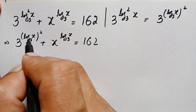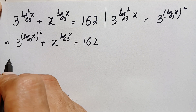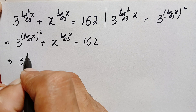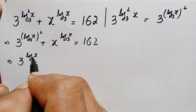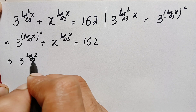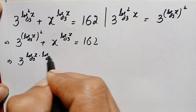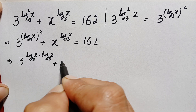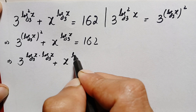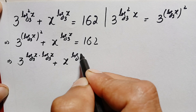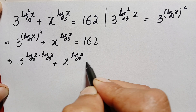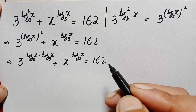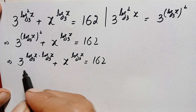Now there is a square over this expression, so we can write the power two times. This becomes 3 raised to the power log of x with base 3, times log of x with base 3, plus x raised to the power log of x with base 3, is equal to 162.